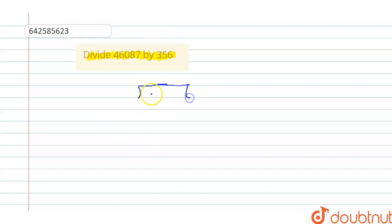46087 divided by 356. Since 356 is smaller than 460, we'll take the first three digits only.